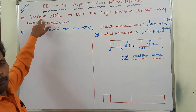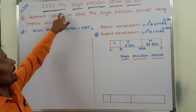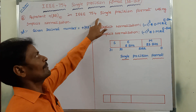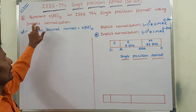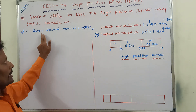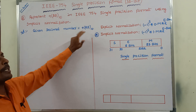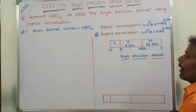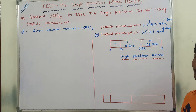The given problem is: represent +28 base 10 in IEEE 754 single precision format using implicit normalization. The given decimal number is +28 base 10. We already know the IEEE 754 single precision format.